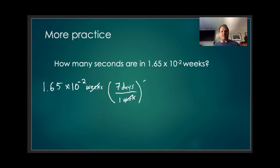So now I have the unit days. I want to convert days to hours because I know there's 24 hours in a day, so the 24 hours will go in the numerator. So now I have days in this numerator and days in this denominator, so they cancel. So now I've got hours. I've got to convert that to seconds.